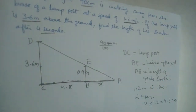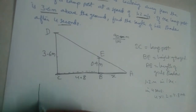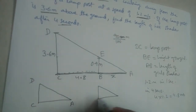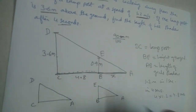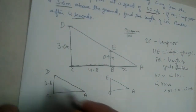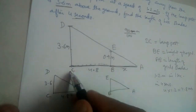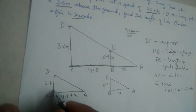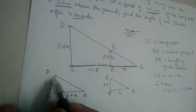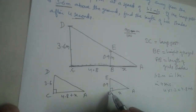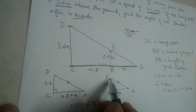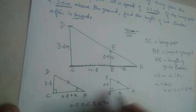Now we have two triangles that will be similar to each other: triangle DCA and triangle EBA. AC equals 4.8 + x, and AB equals x. DC = 3.6 and BE = 0.9. Angle C and angle B are both 90 degrees, since the lamppost and the girl are both perpendicular to the ground. Angle A is common to both triangles.